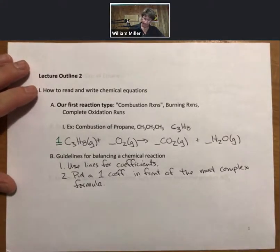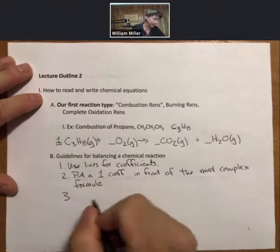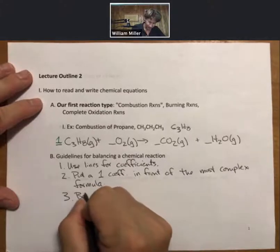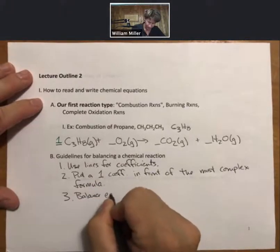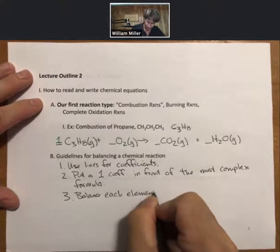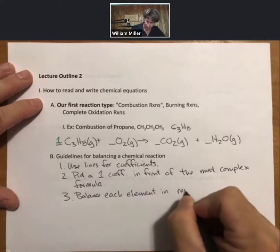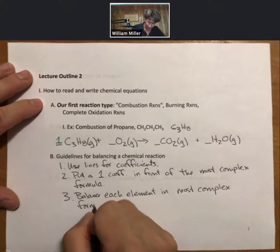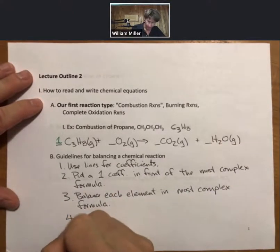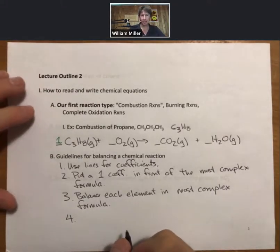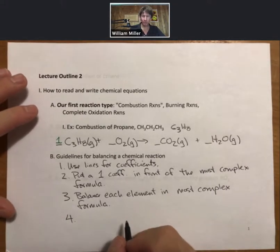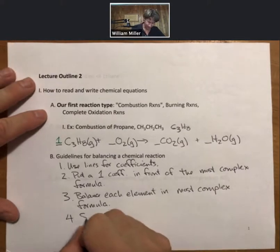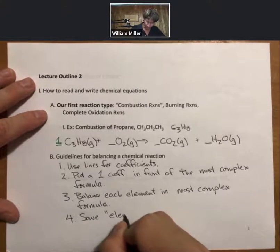Then number three guideline. It's going to be balance each element in the most complex formula. And three and four sort of go together. But four is going to be save element only formulas for last.